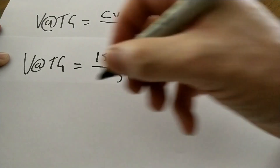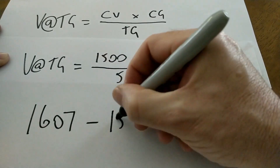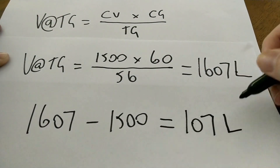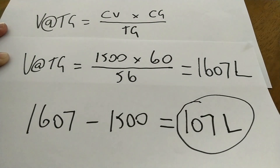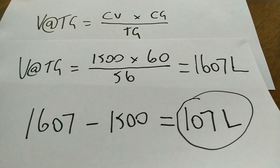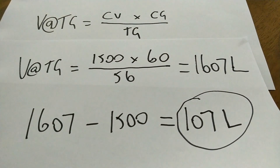We can work out how much hot liquor we need to add by subtracting the current volume from the total volume at our target gravity. So: 1,607 minus 1,500 equals 107 litres. We know we need to add 107 litres in order to hit 1056, which is our target gravity. Simple.